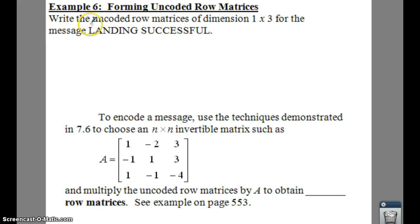So if we choose our letters for L, A, N, we need to go by 3s here. So our first 1 by 3 matrix would end up being L is the 12th letter, A is the 1st, N is the 14th.